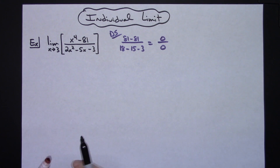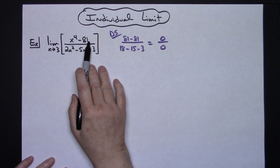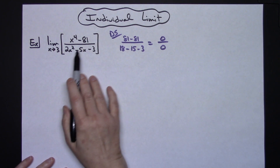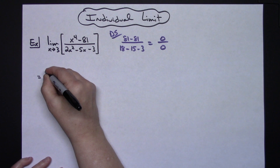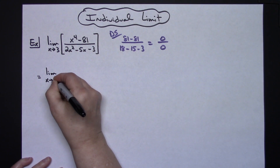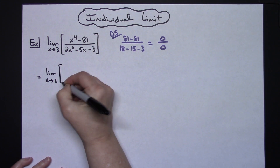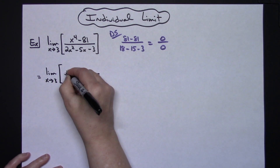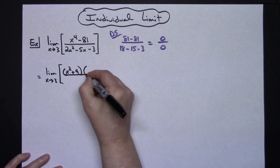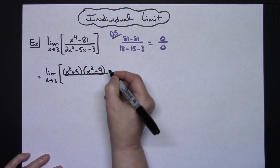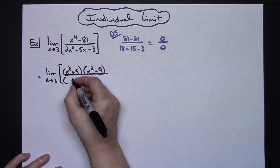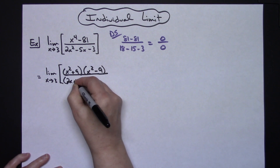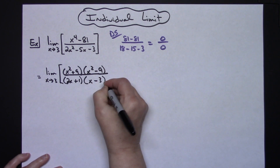We're going to go with a factoring approach. The numerator is the difference of two squares, and the bottom is a trinomial that can be factored. So we're going to factor both the top and the bottom. We'll have the limit as x approaches 3. In the numerator I'm going to have x squared plus 9 times x squared minus 9. Factoring that trinomial in the bottom — hopefully at this point in calculus you can factor by guess and check — gives us 2x plus 1 and x minus 3.